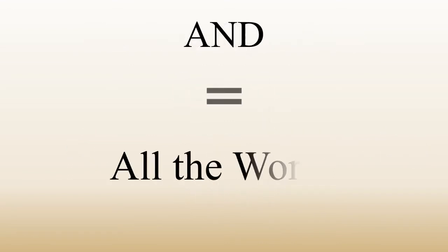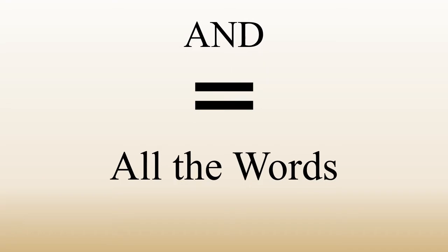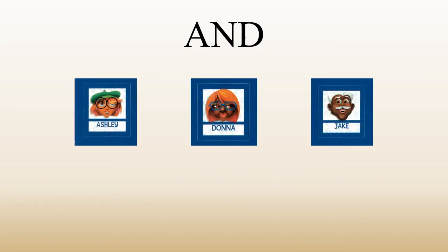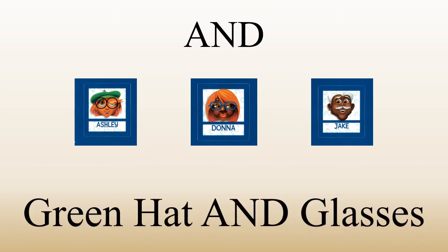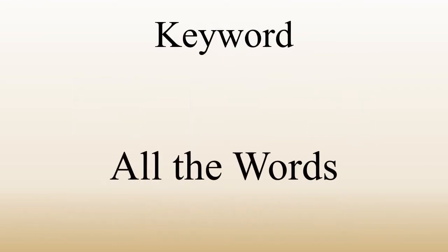The AND operator tells the database that you want all of the words you typed in to show up in your results. For my game of Guess Who, if I asked if your person was wearing a green hat AND glasses, you would only be able to say yes if they had both a green hat and glasses, not just one or the other. Keyword searching is essentially like using the AND operator. AND is a good way to narrow your search, since all your words have to show up in the results.